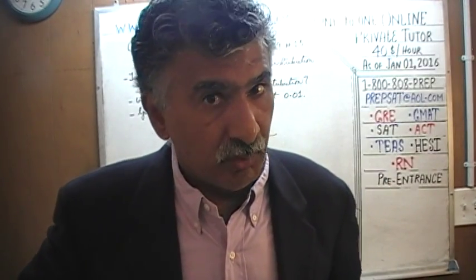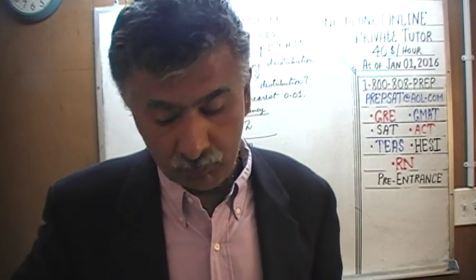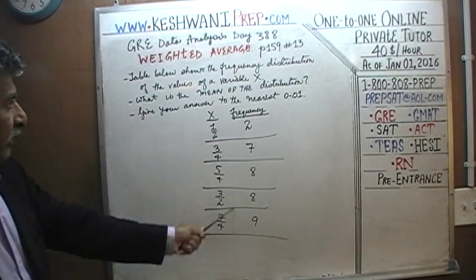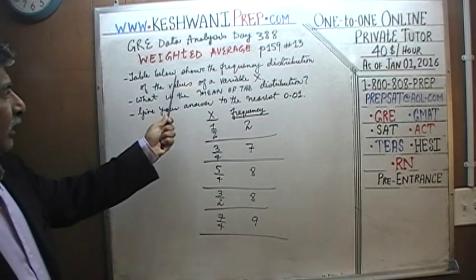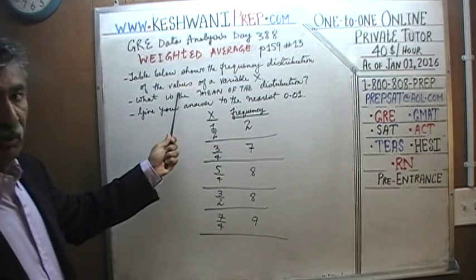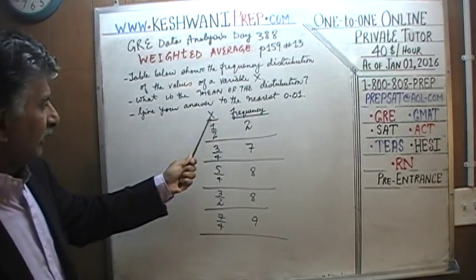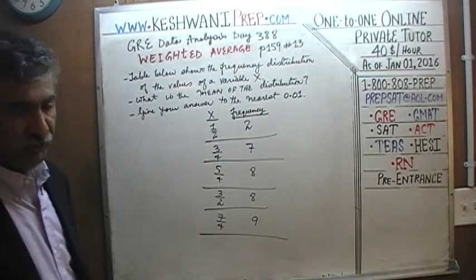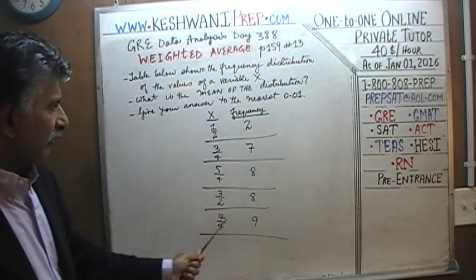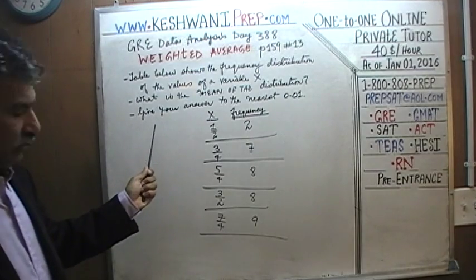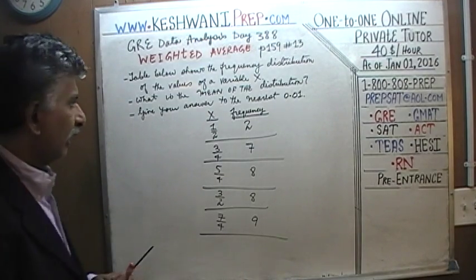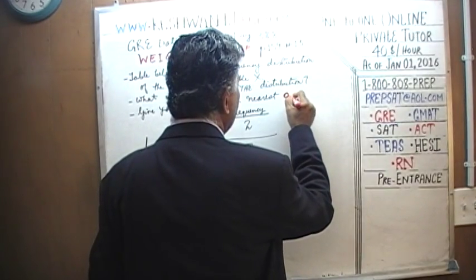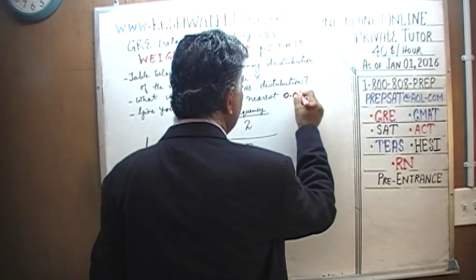It is important that you have the book in front of you so that you can follow the work. The problem says: the table below represents the frequency distribution of the values of the variable X. Here are the values of the variable X. The question simply is: what is the mean of this frequency distribution? We are asked to give our answer to the nearest 0.01.